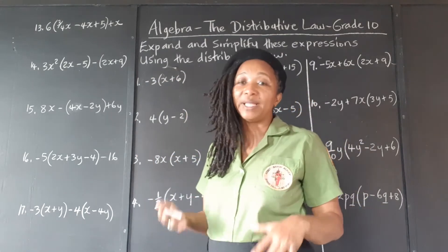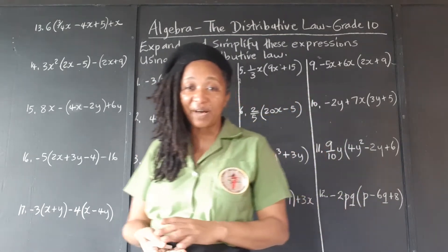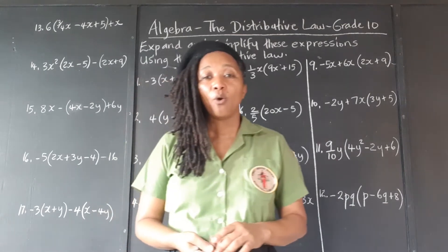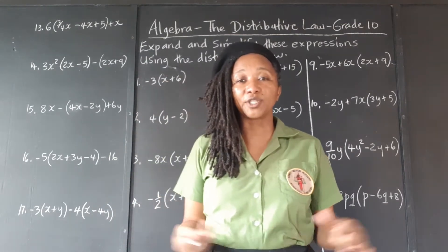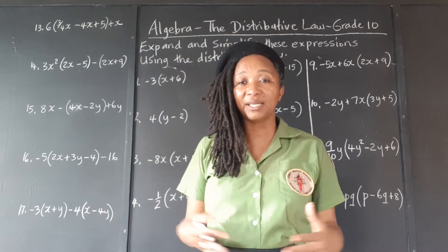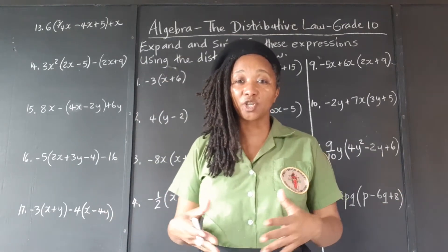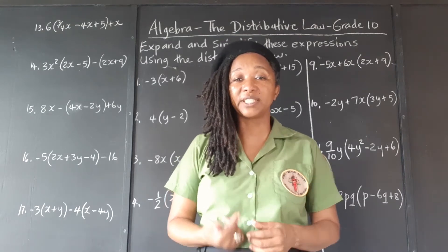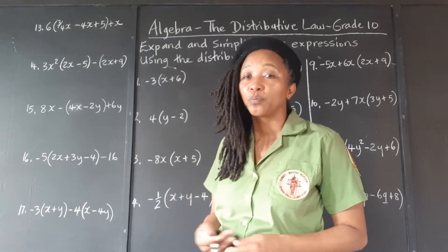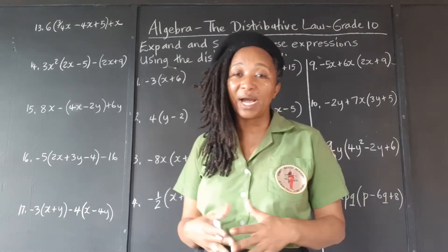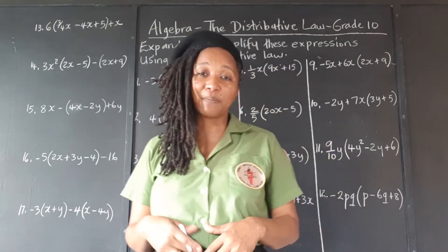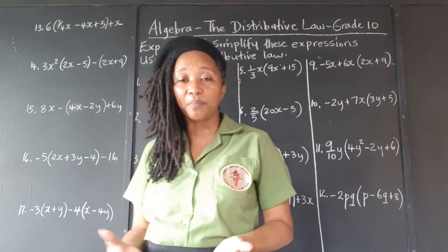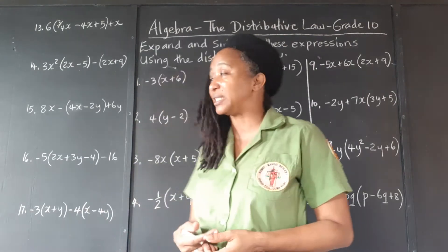And then we're going to simplify the expression, meaning we're going to combine the like terms. If there are like terms, once it's possible, we're going to combine the like terms and make the expression a simpler form of itself.